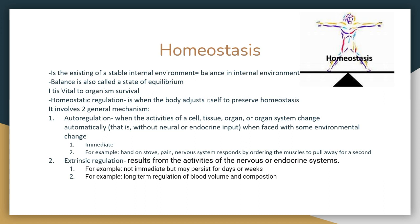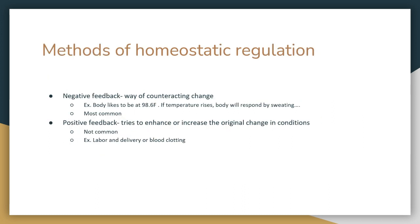Extrinsic regulation results from the activities of the nervous or endocrine system. It's not immediate, but when it does occur, it persists for days or weeks. An example is the long-term regulation of blood volume and composition.